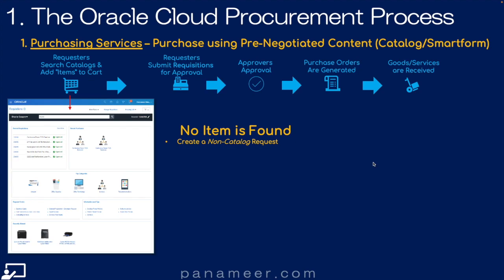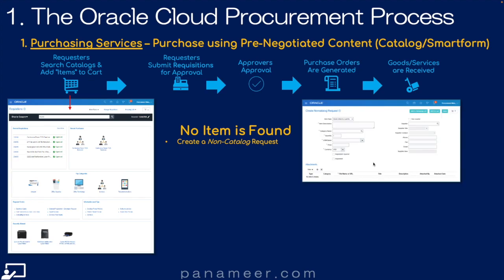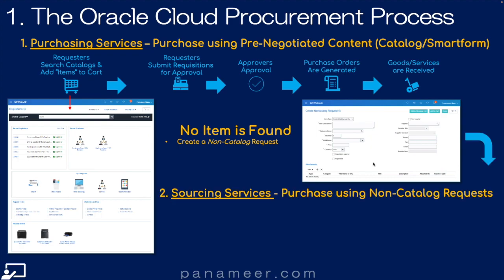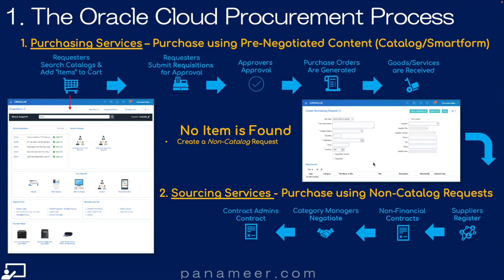If no pre-negotiated content — or what they call an item in the catalog — is found, then the requester fills out a non-catalog request, ordering something that is not pre-negotiated. That invokes purchasing, or what we'll call sourcing services. They may or may not, depending on need, register a supplier. They may or may not create some non-financial contracts, like a joint venture teaming agreement. Then category managers go through a process called negotiation, also known as sourcing. Contract admins may then create other contracts. You have a pre-purchase contract, which could be done at this step or back when the supplier onboards and registers. Then you create a purchase contract that creates additional catalog content or goes straight to a PO.